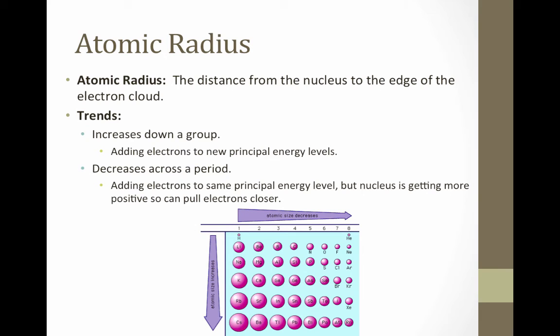Here's a summary of this trend and a visual representation of a couple of elements. Notice the atomic size is decreasing across the period but increasing down the group. You'll also notice that this trend corresponds to ionization energy — as you go down a group and the radius increases, electrons get further away, making ionization energy decrease. Likewise, as you go across a period and the atomic radius decreases, ionization energy increases because the electrons are getting closer to the nucleus, making them more difficult to remove.